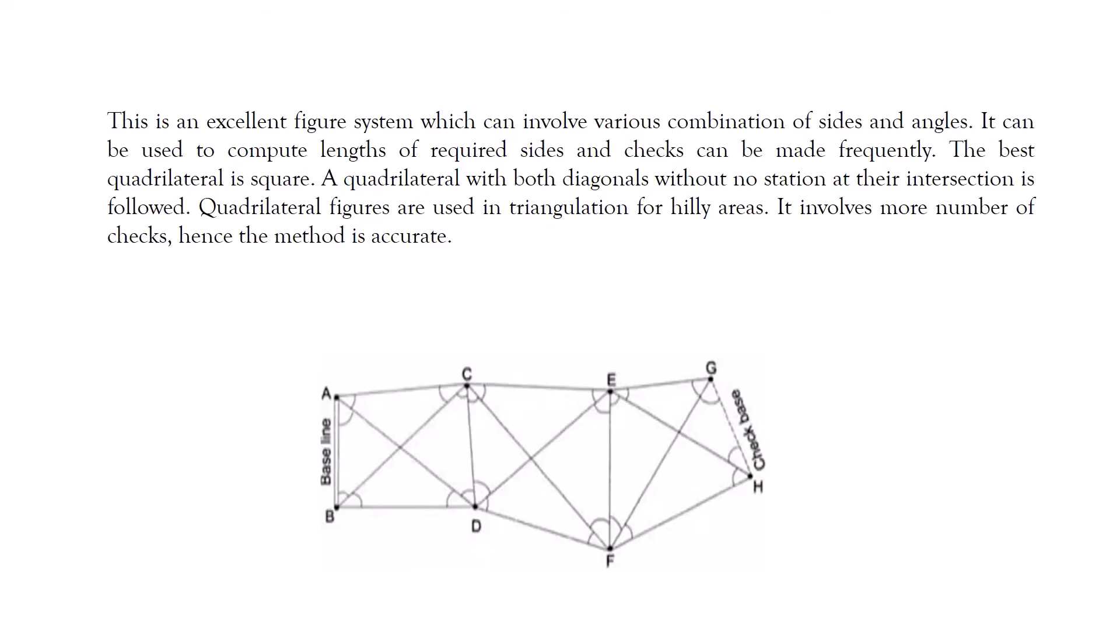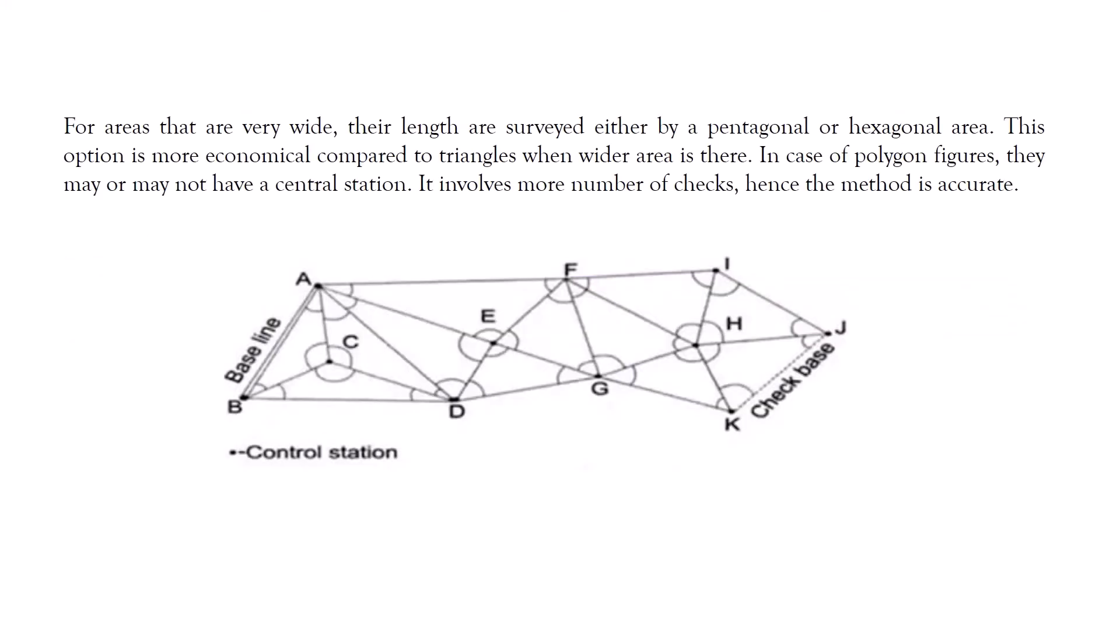Polygons for triangulation: For areas that are very wide, their length is surveyed either by a pentagon or a hexagonal area. This option is more economical compared to triangles when a wider area is there. In case of polygon figures, they may or may not have a central station. It involves more number of checks compared to other figures opted, hence the method is more accurate.